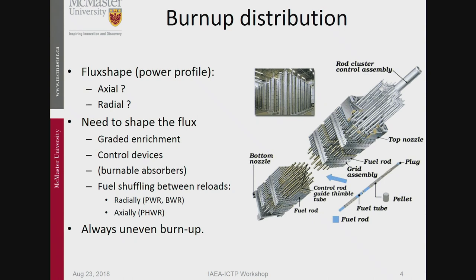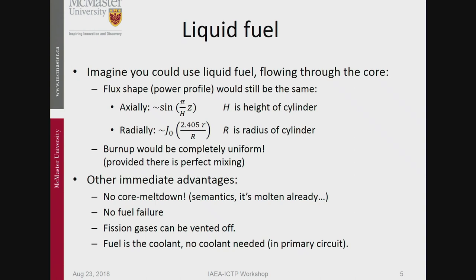Just imagine that you could use a liquid fuel, and it would flow through the core. The power shape is of course still the same — the neutronics gives you this flux shape. But now, since the fuel is moving slowly through, things that get a lot of neutrons here will also pass through an area where there's less, and everybody gets the same thing. The burnup would be completely uniform, assuming that there's perfect mixing.